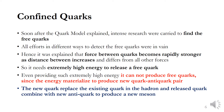Soon after the quark model was proposed, intense research was carried out to find free quarks. But all efforts in different ways to detect free quarks were in vain. It was explained that the force between the quarks — the inter-quark force — becomes rapidly stronger, very much stronger, as the distance between the quarks increases. This force differs from all other forces, because generally the strength of all forces decreases when the interacting particles are farther apart.